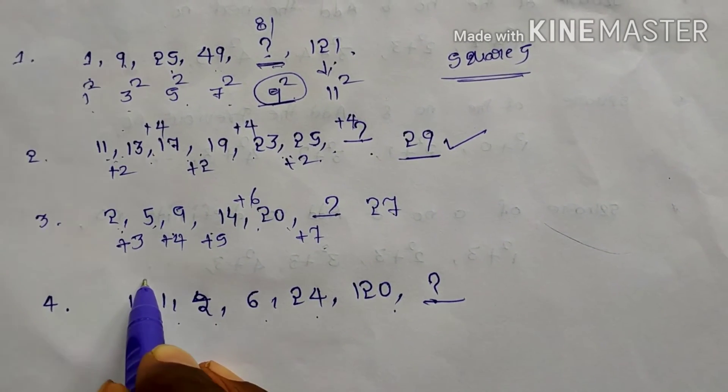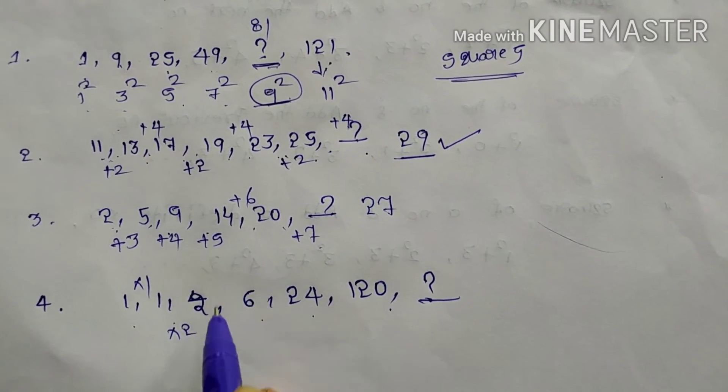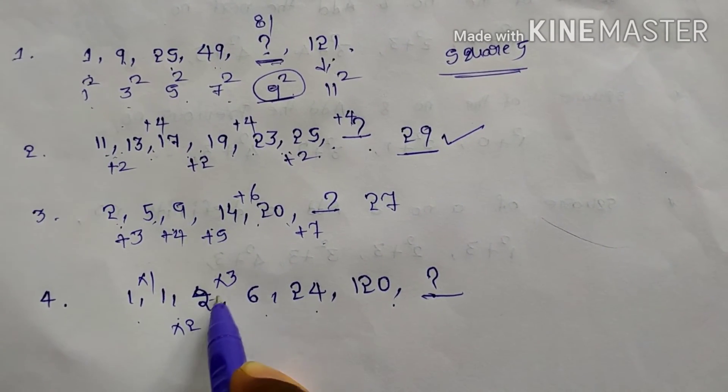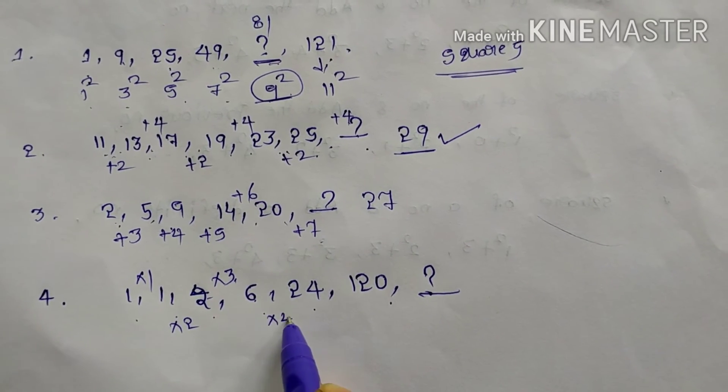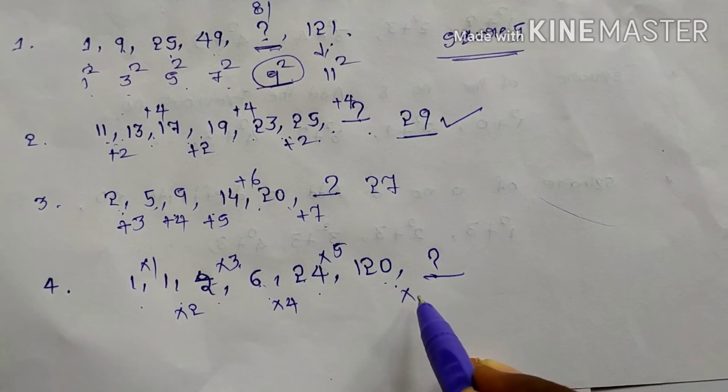Just you can see here. It is just multiplication. 1, 1, 1 only. 1, 2, 2. 2, 3, 6. 6, 4, 24. 24, 5, 120.